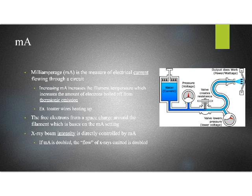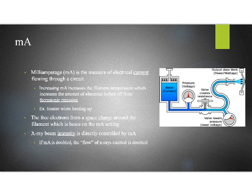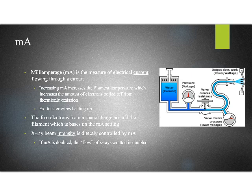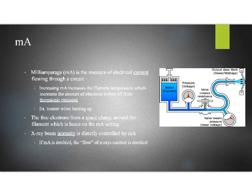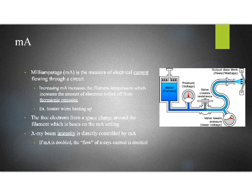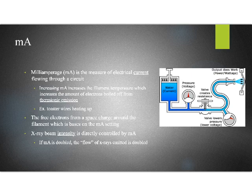These free electrons form a space charge around the filament. That means that there's more electrons bunching up around the filament, kind of loosely moving around the filament. And this is based solely on the amount of flow through that circuit. So, as I change my mA, I'm changing the number of electrons that are floating around that filament. So, if mA is doubled, the flow of electrons and the flow of x-rays is also doubled. So, as I change my mA, I'm basically changing the number of x-rays that I'm producing. We'll come back to the water metaphor. It will be helpful for us in thinking about kVp as well.